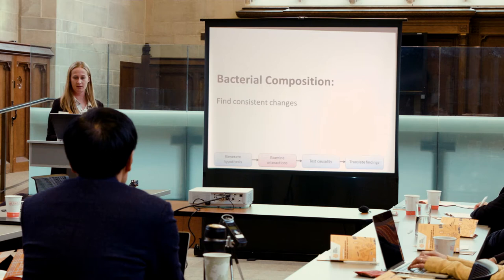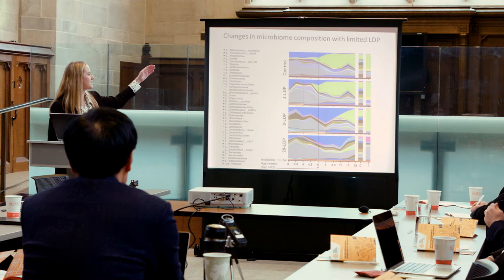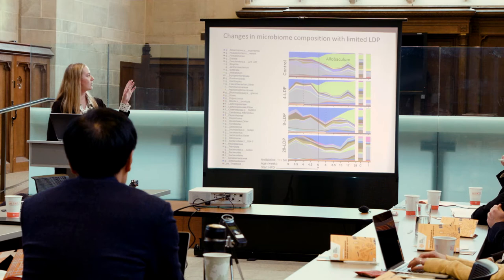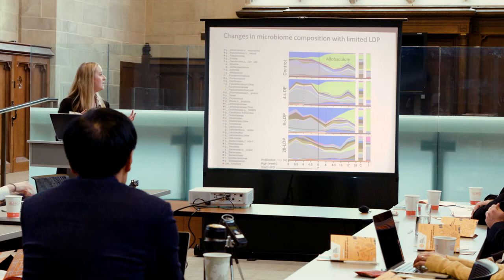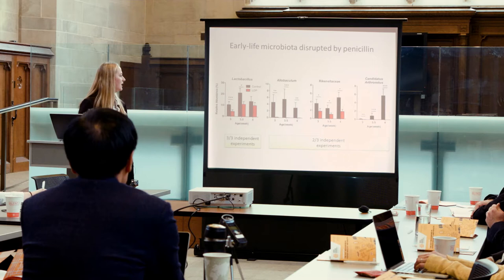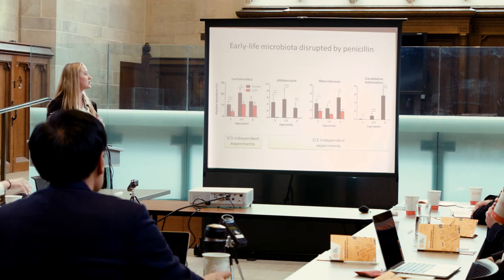Because we were a microbiology lab, we wanted to find out which microbes were actually changing. We sequenced the fecal microbiome over time across control mice and mice on 4, 8, or 28 weeks of low-dose penicillin. Allobaculum — the bright green population — is about 5% in normal chow mice, expands on high-fat diet, and is depleted in early life across all experimental groups. In three out of three independent experiments we found a consistent reduction in Lactobacillus, Allobaculum, Reichenellaceae, and a bacterium called Candidatus Arthromitis, also known as Segmented Filamentous Bacteria or SFB.